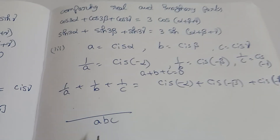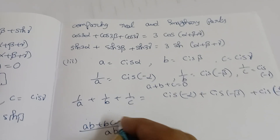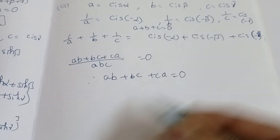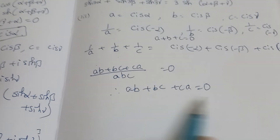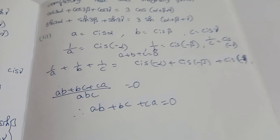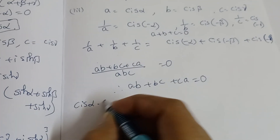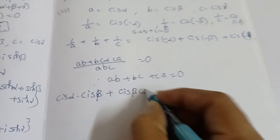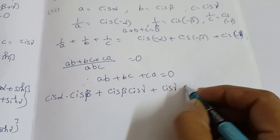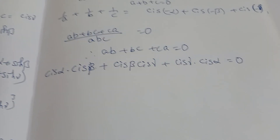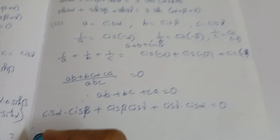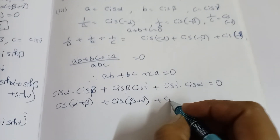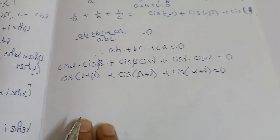Taking LCM of 1/a + 1/b + 1/c = 0 gives (bc + ca + ab)/(abc) = 0, so ab + bc + ca = 0. Now substituting: a·b = cis α · cis β = cis(α+β), b·c = cis β · cis γ = cis(β+γ), and c·a = cis γ · cis α = cis(γ+α). So cis(α+β) + cis(β+γ) + cis(γ+α) = 0.